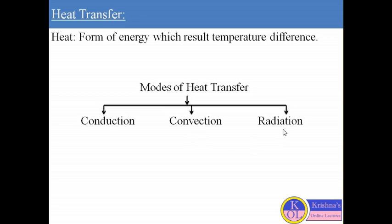The third mode of heat transfer is radiation. Radiation is when heat is transferred through electromagnetic waves between two bodies which are separated by empty space or gases. Generally, electromagnetic waves are used to transfer heat from one body to another. For example, microwaves from a microwave oven, or an x-ray machine. These are the three basic modes of heat transfer.